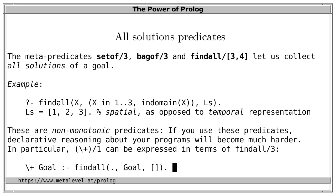In particular, we can express not provable in terms of all solution predicates. So this is an example of a predicate that can fail if we add new facts to the program.